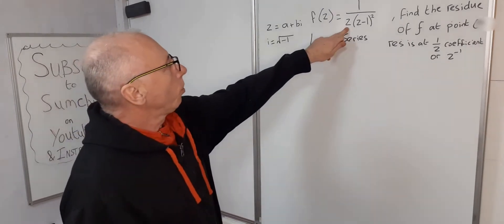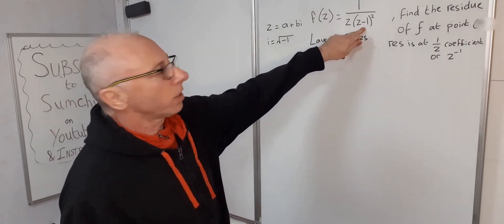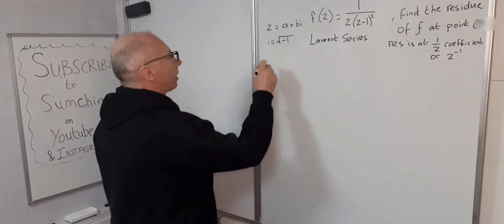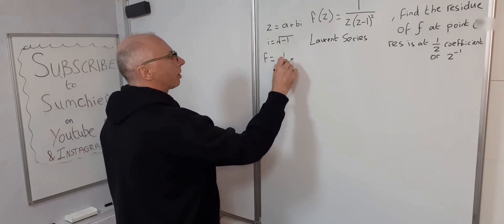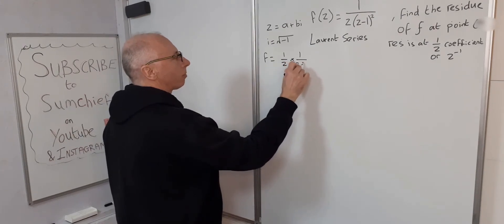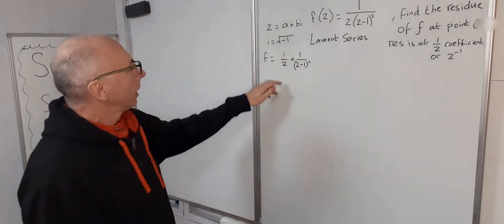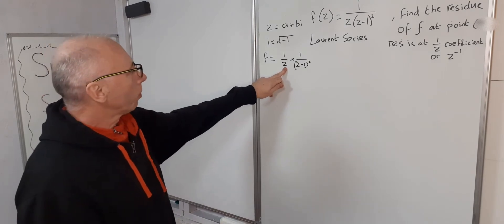So 1 over z times z minus 1 squared, that is of the form 1 over z times 1 over z minus 1 squared. Now 1 over z, that's fine we can work with that.